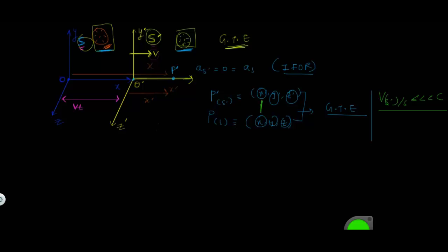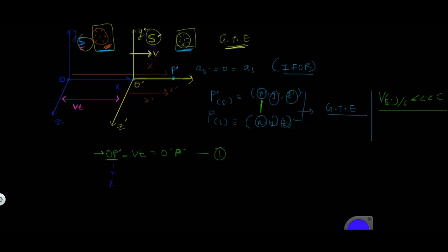Let's relate x' and x. The distance from the origin of S to point P' is given by x, and the distance from the origin of S' to point P' is given by x'. Relating them: OP' minus VT equals O'P'. OP' can be written as X, VT remains VT, and O'P' can be written as X'.